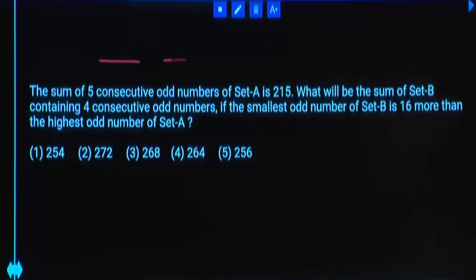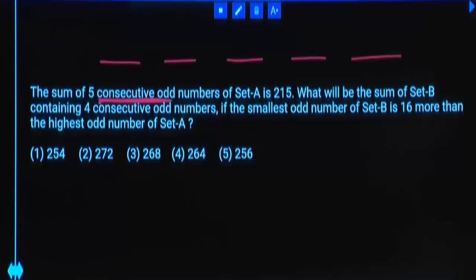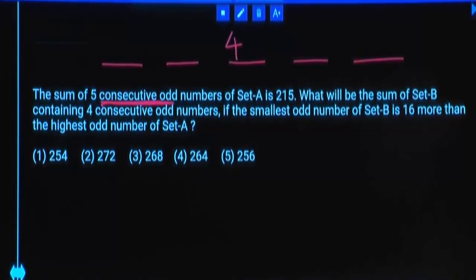In set A, we have 5 numbers. What is given? Sum. When you know sum, how do you get average? Consecutive. Yesterday only we discussed. Average is the middle number. Average of 5 numbers is equal to 215 by 5. How much is that?